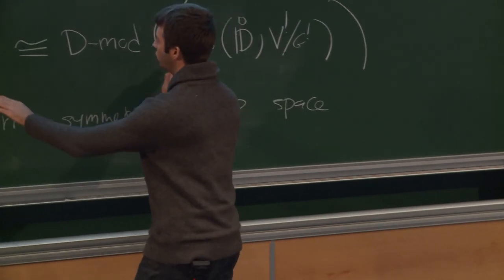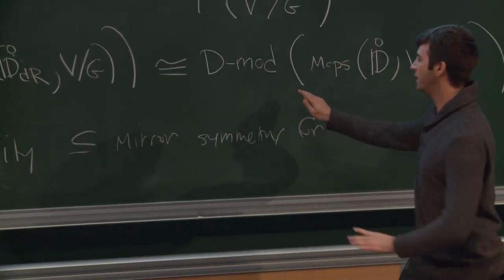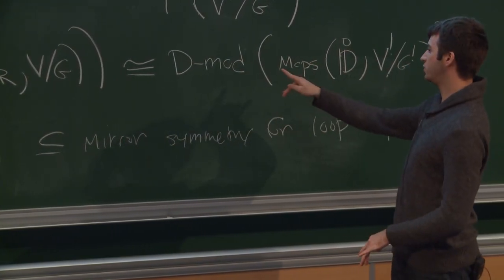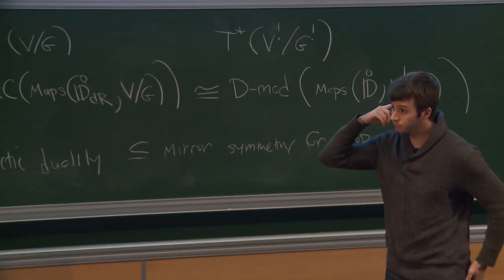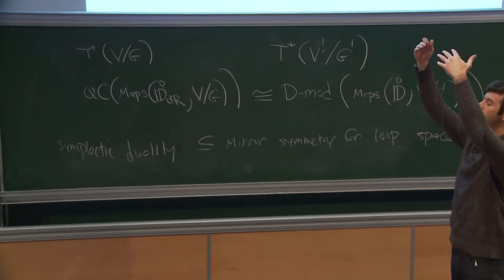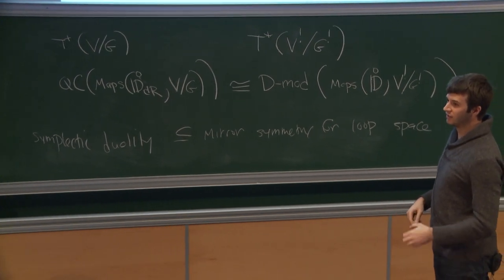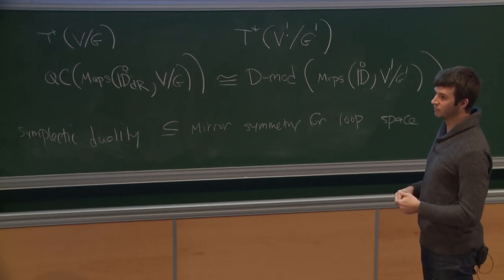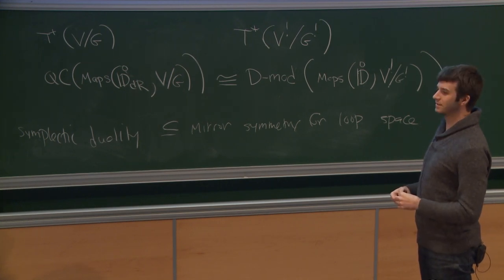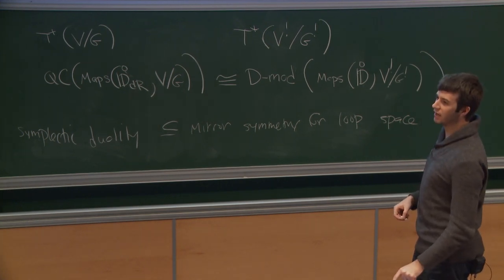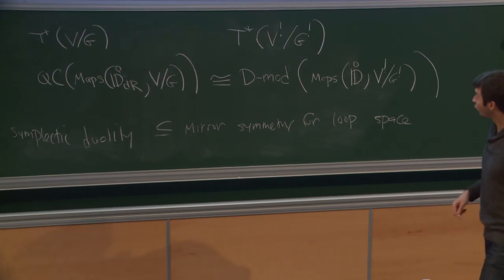I'm not going to go deeply into an example of this statement. I'm going to describe a way that you can deduce statements like this from local Langlands — you would have to prove some things in local Langlands first, and then it would let you get these results. Both of these two theories are type A quiver gauge theories.